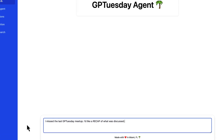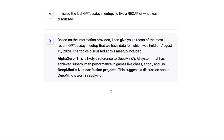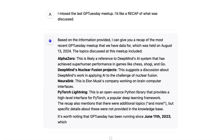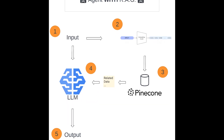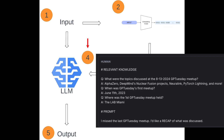Now we can try retrieval augmented generation. Let's send this message to the GPTuesday agent: I missed the last GPTuesday meetup, I'd like a recap of what was discussed. Now we're getting responses that are more catered to our domain. Here is a diagram walking us through what just happened. One, we sent a prompt to our agent. Two, our prompt got converted into a vector. Three, we searched our Pinecone knowledge base for the vectors most similar to the vector representing our prompt, and Pinecone returned the original data represented by the highest matching vectors.